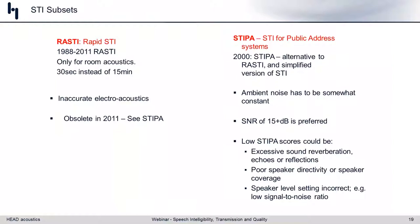A quick detour: RASTI — Rapid STI — was developed in the late 1980s. It was basically the PSIL evolution of AI, cutting down on bands to speed up calculation. Back then, the RASTI calculation could be done in 30 seconds, compared to about 15 minutes for regular STI. Today it doesn't matter much and has really been superseded by STIPA — the Speech Transmission Index for Public Address systems — which is not something we use too much in telecommunications today.